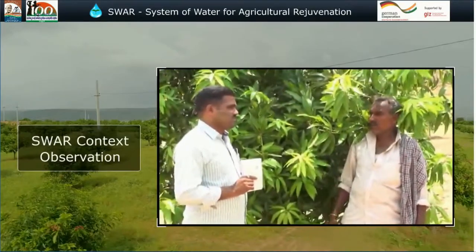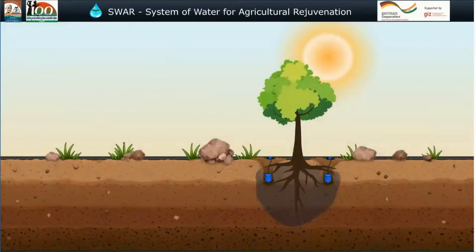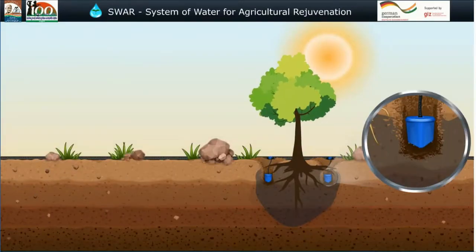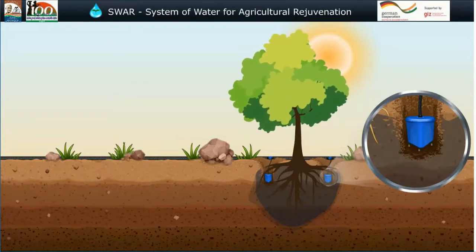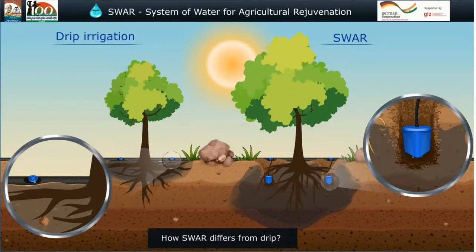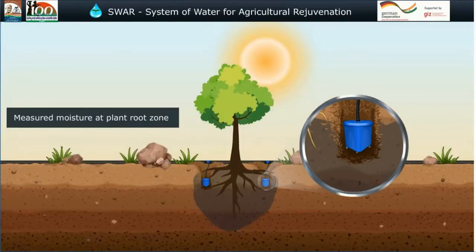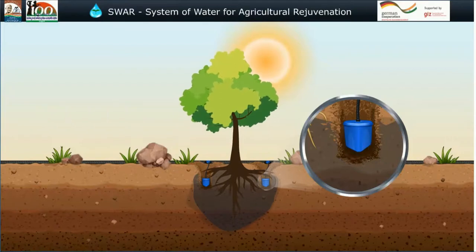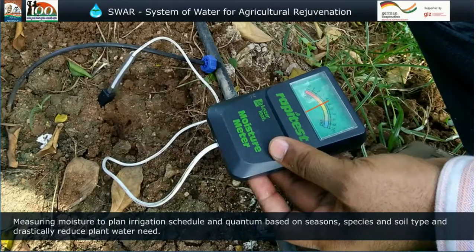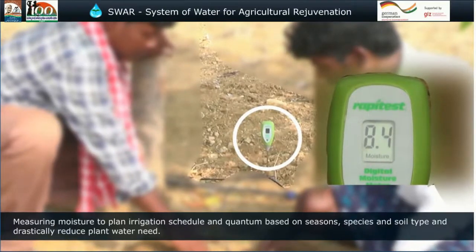Here is a clip from a video developed by the Centre for Environment Concern, outlining the SWAR system and how it differs from above-ground drip irrigation systems. SWAR transforms water use in agriculture — measured moisture is the ideal ecosystem to foster soil microbes, improve soil health and its capacity to hold water, and enable wider capillary spread of moisture to serve growing roots. Unlike drip, which releases water quantum on the surface, SWAR delivers measured moisture at the plant root zone, and plans irrigation schedule and quantity based on seasons, species, and soil type, drastically reducing plant water need.